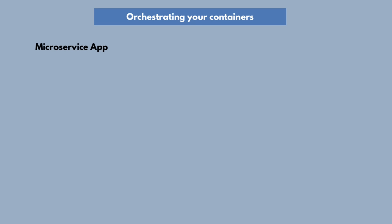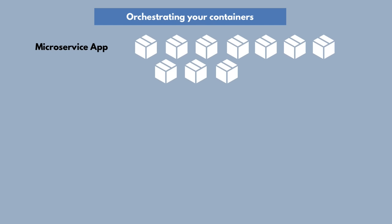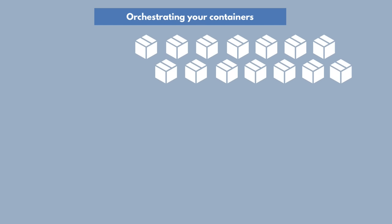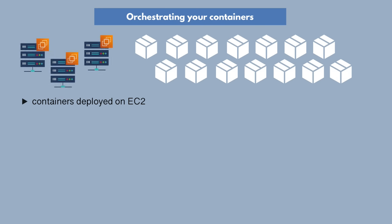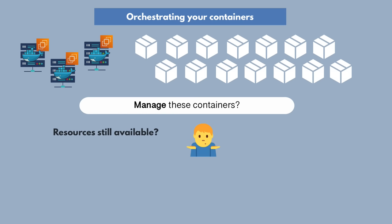Let's say we have created 10 containers for each of our 10 microservices, plus five other containers that our microservices use running different applications. We deploy all of those on our EC2 instances which have Docker installed. Once you have deployed them, how do you manage them? How do you know how much resources you still have remaining on these machines? How do you know where to schedule the next container?